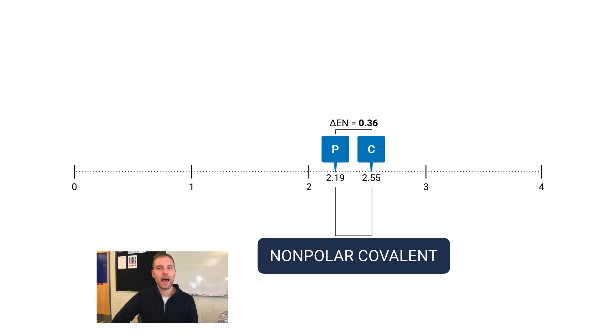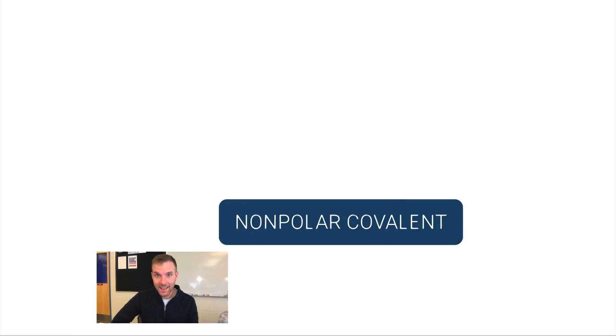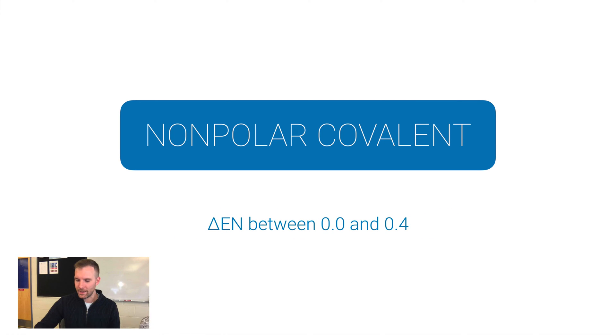Non-polar covalent means that the non-metals involved in this bond have similar electronegativity values, and when that takes place they tend to share electrons evenly. I know that this is going to be a non-polar covalent bond because the electronegativity difference, or this delta EN—by the way a delta here just means change in or difference in—the delta EN is between zero and 0.4.